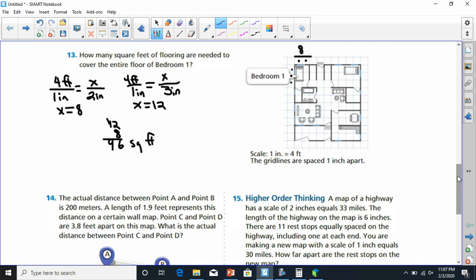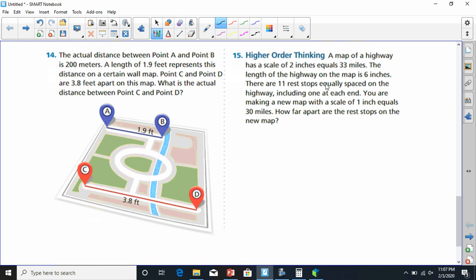Okay, I'm off and running to number 15 now to finish off. It says a map of a highway has a scale of 2 inches equal 33 miles. And it says the length of the highway on the map is 6 inches. So we're going with 6 inches here. So we're trying to find the distance. Well, this is going to be 2 times x, which is 2x, has got to equal 33 times 6.